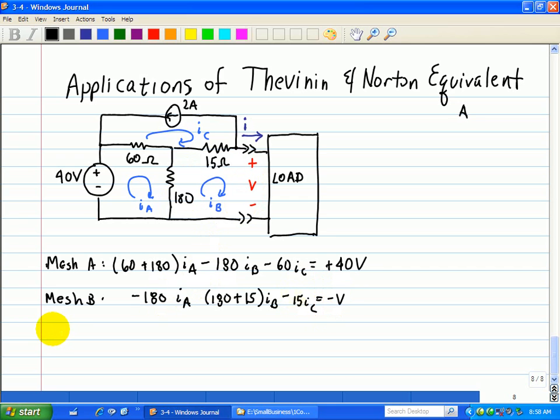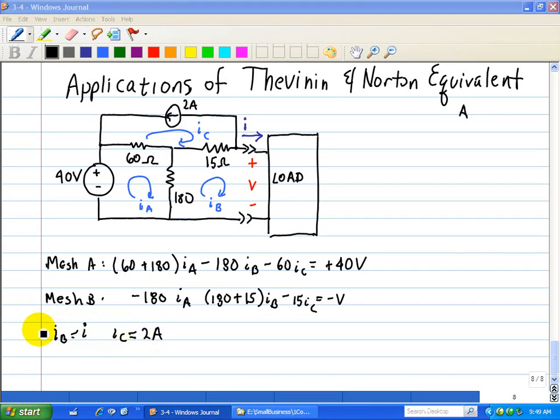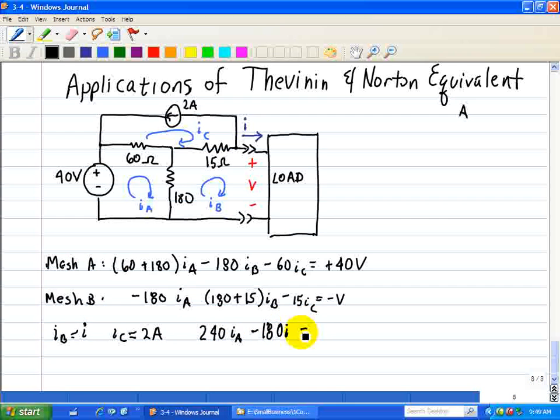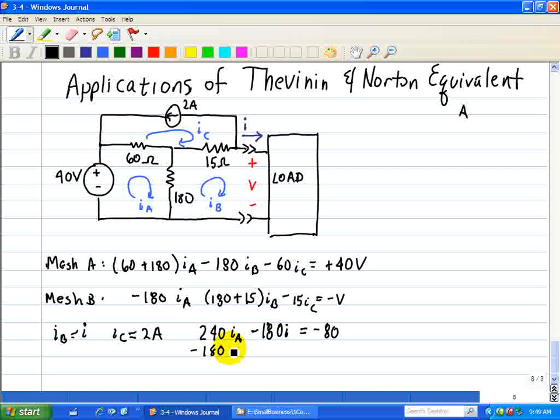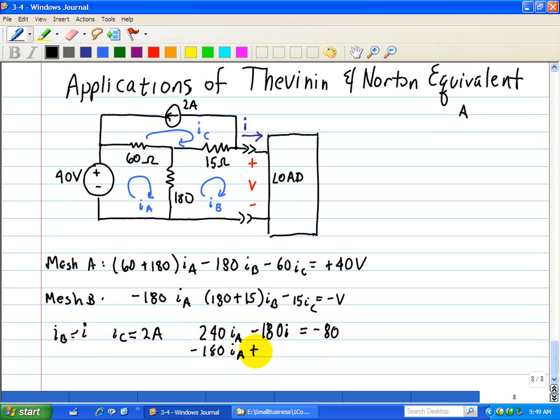We note that IB is equal to I, and that IC is equal to 2 amps. Substituting these values in mesh A and mesh B yields the following. 240 IA minus 180 IA is equal to minus 80. And that minus 180 IA plus 195 I is equal to minus 30 minus V.